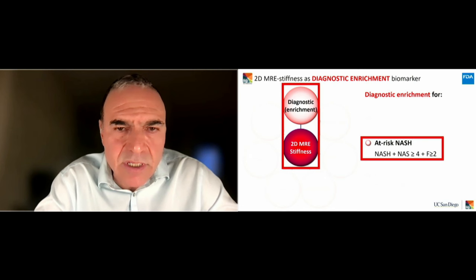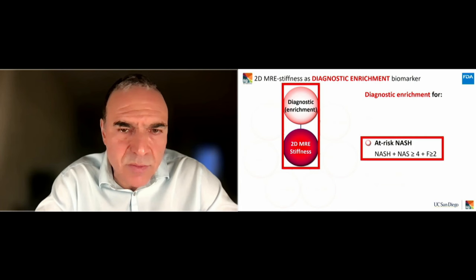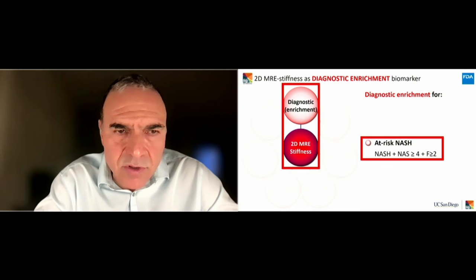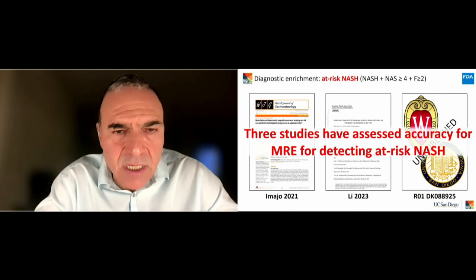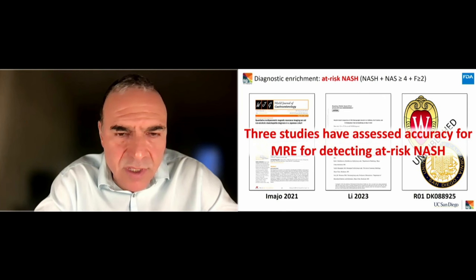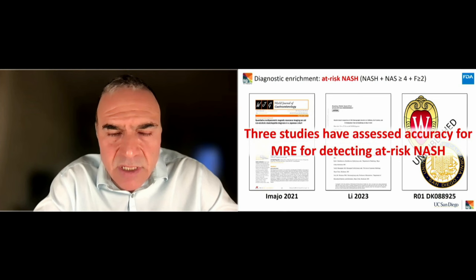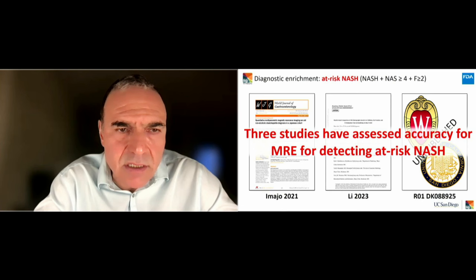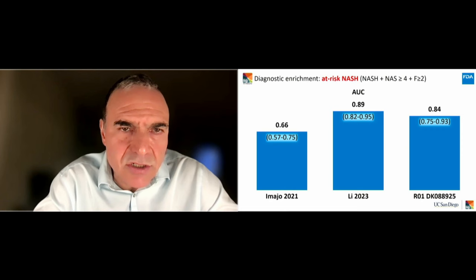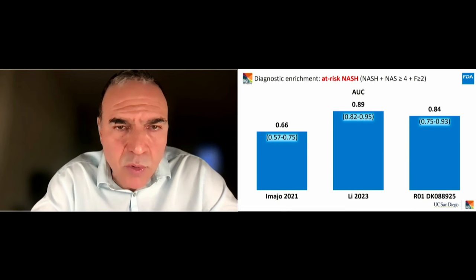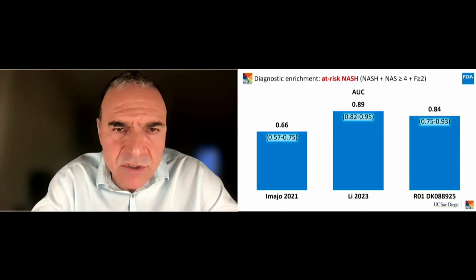Now let's look at evidence for MRE to detect at-risk NASH, defined as NASH with NAS score greater than or equal to 4 and fibrosis at least equal to 2. Unlike the previous endpoint with 26 studies, I was able to find only three studies: two published — IMAGO 2021 and LEED 2023 — plus emerging unpublished data from an R01 I have with Scott Reeder. The AUC of MRE for detection of at-risk NASH ranges from 0.66 for IMAGO to 0.89 for LEED, with our emerging R01 data showing an AUC of 0.84. For the LEED paper, the Youden index had a cutoff of 3.3 kilopascals with excellent sensitivity and specificity. Our emerging R01 finds a similar cutoff of 3.4 kilopascals with slightly lower sensitivity but slightly higher specificity.